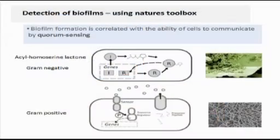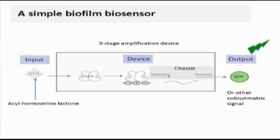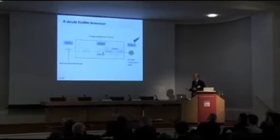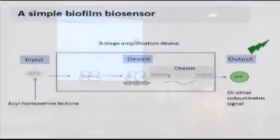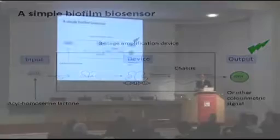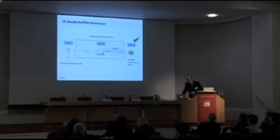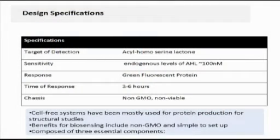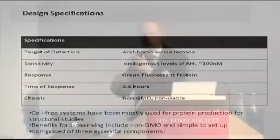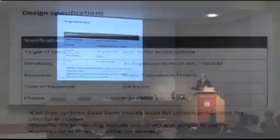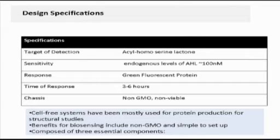We chose a biological system based on intercommunication between microbial species that allows biofilm formation — occurring through a small molecule called acyl homoserine lactone (AHL). The design is simple: detect this small molecule at a certain threshold and give an output signal — green colorimetric output. It's a three-stage amplification device. By engineering paradigm, you start with specifications: what to detect, the threshold because that's what cells communicate physiologically, and the response of green fluorescence within three to six hours.